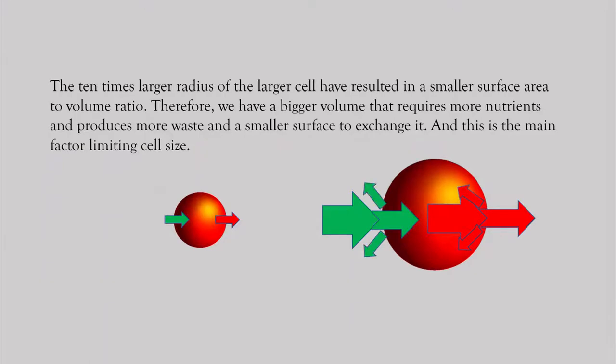And we can see in this slide the smaller cells can get all the nutrients and release all the waste that they need to thrive, while the larger cells only can get part of the nutrients needed for the large volume and can also get rid of only a small portion of waste.